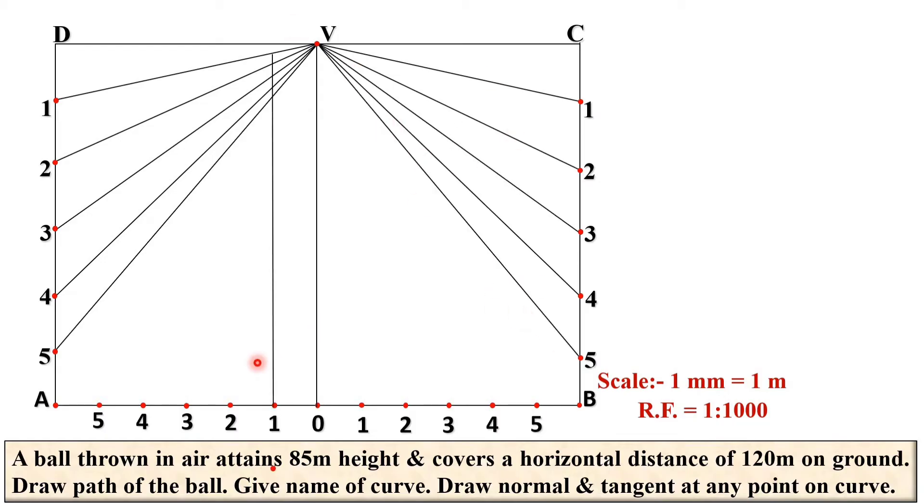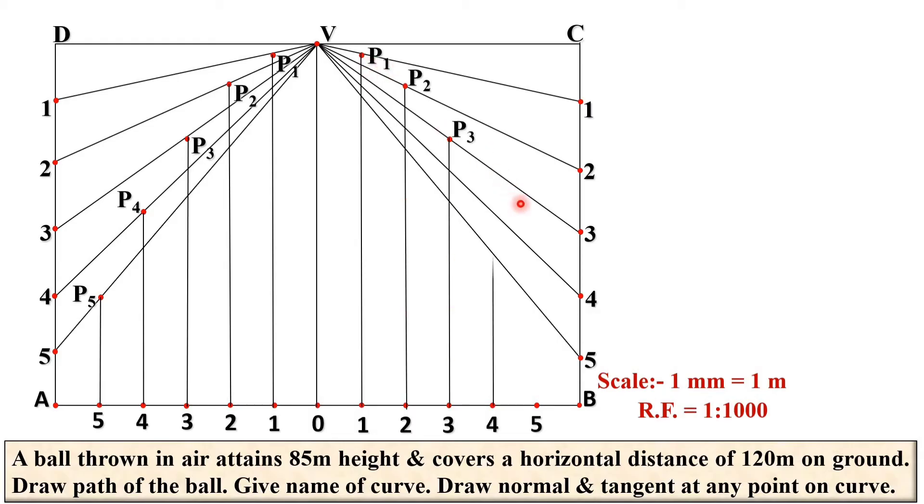Now draw the vertical line passing through this 1 which will intersect this V1 line at this point. Give the name as P1. Now you can understand it should be P2, next P3, next here it is P4, and next here it is P5. In the similar way, you can find the point P1, P2, P3, P4, and P5.